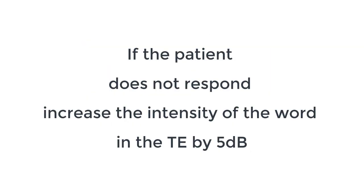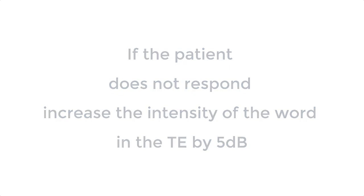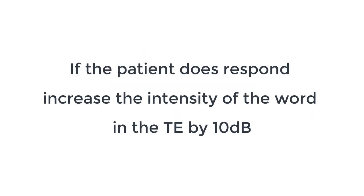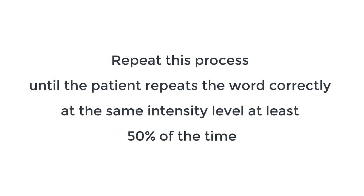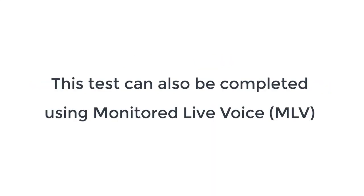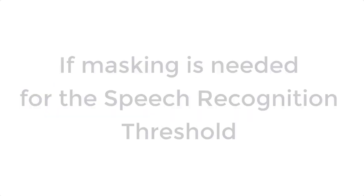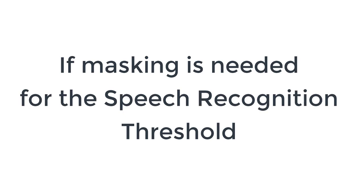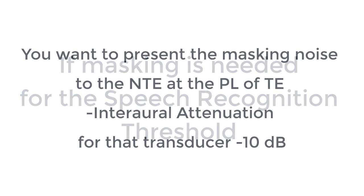If the patient does not respond, increase the intensity of the word in the test ear by five decibels. If the patient does respond, decrease the intensity of the word in the test ear by 10 decibels. Repeat this process until the patient repeats the word correctly at the same intensity level at least 50% of the time. This can also be completed using monitored live voice.